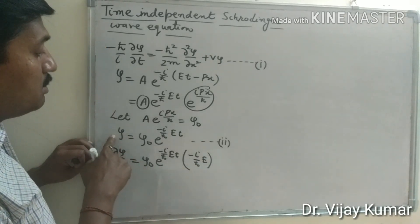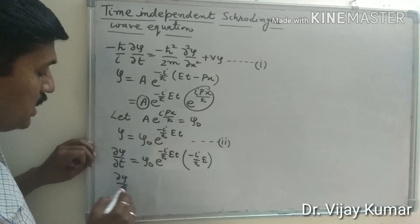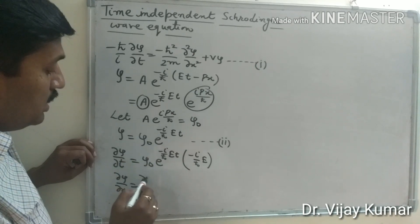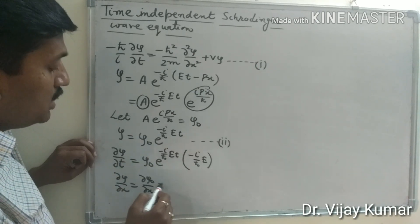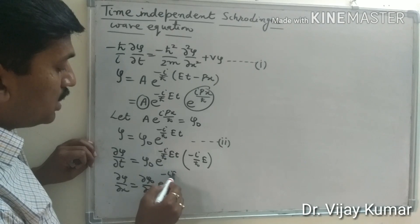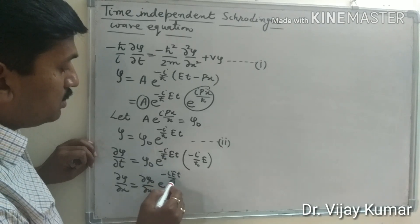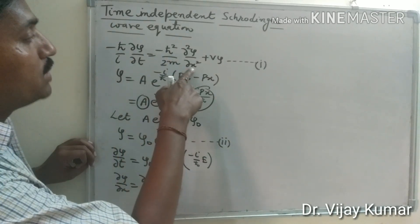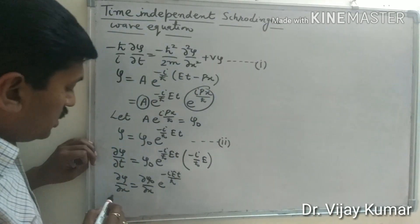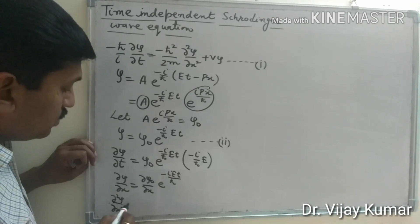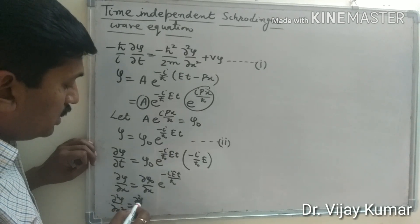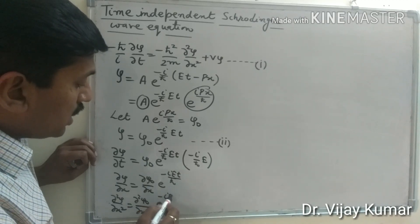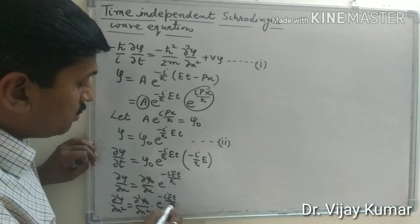Now differentiate this equation with respect to x: del psi upon del x equals del psi-naught upon del x times e to the power minus i Et upon h-cross. Again differentiate because we require the second derivative: del squared psi upon del x squared equals del squared psi-naught upon del x squared times e to the power minus i Et upon h-cross.